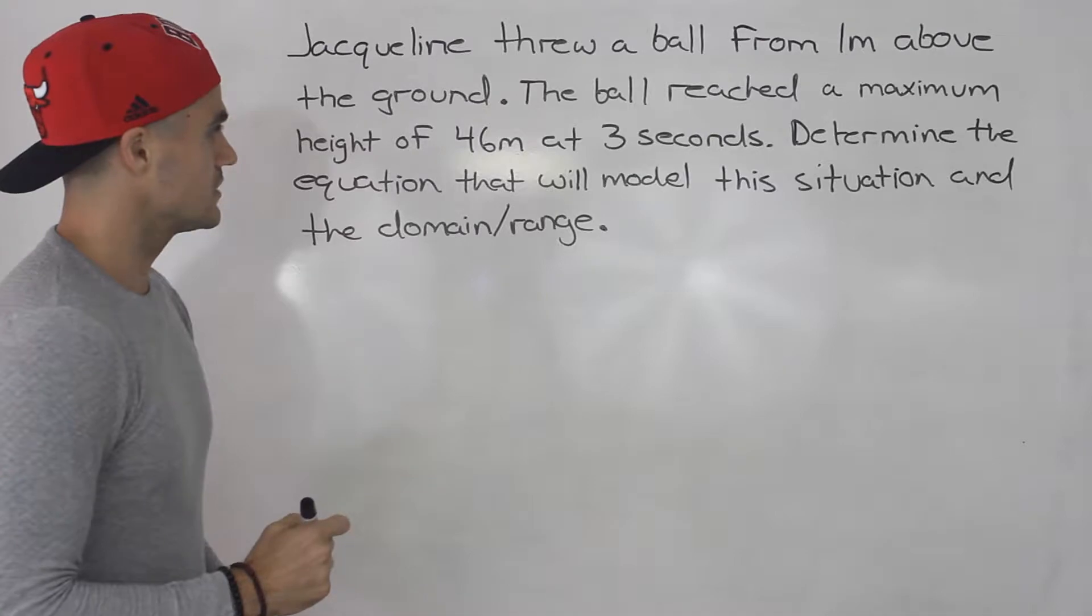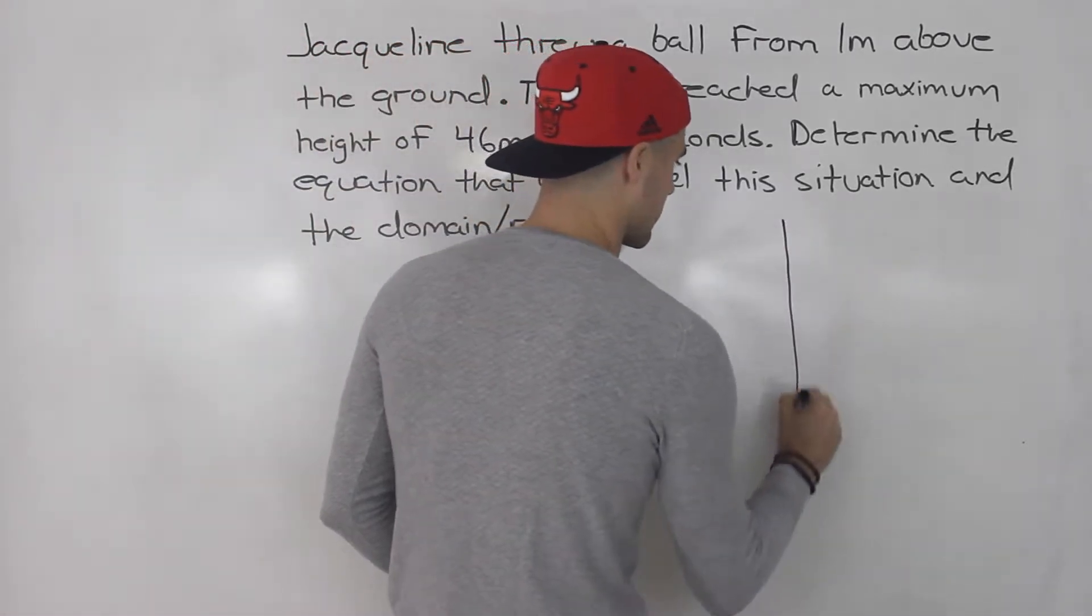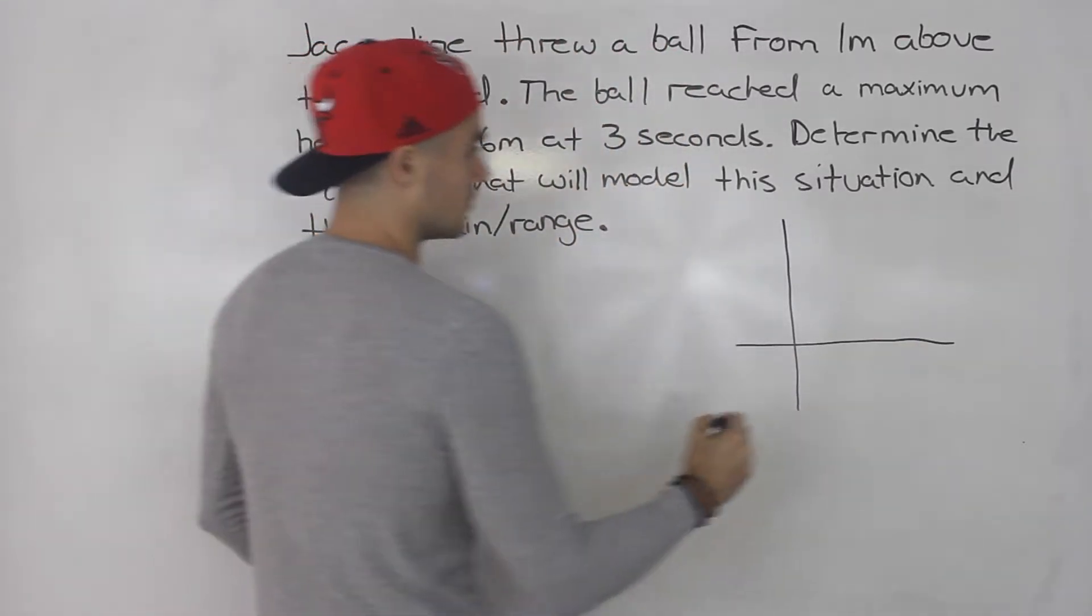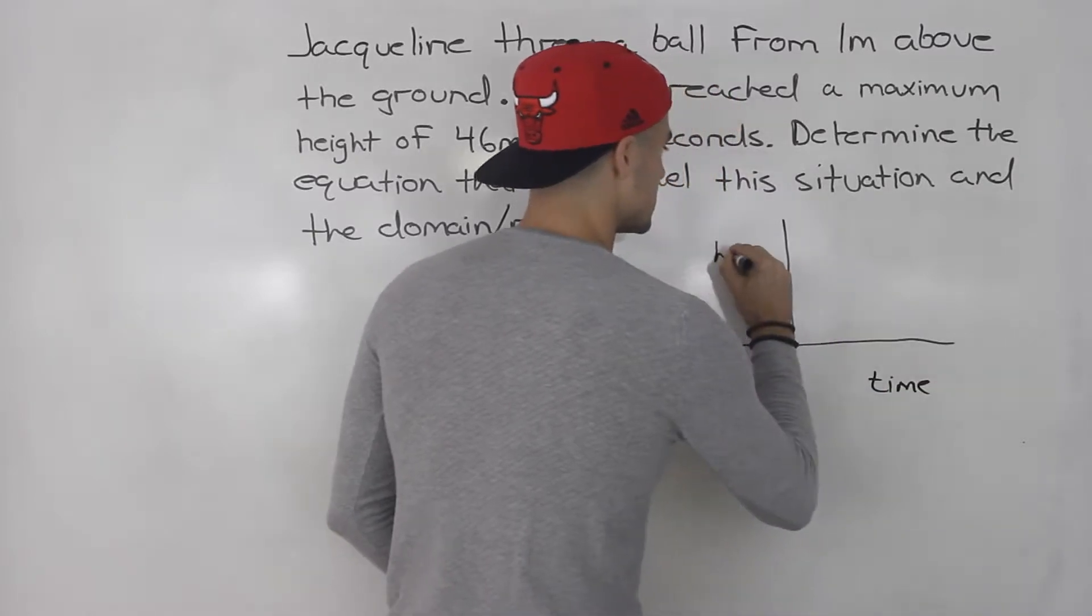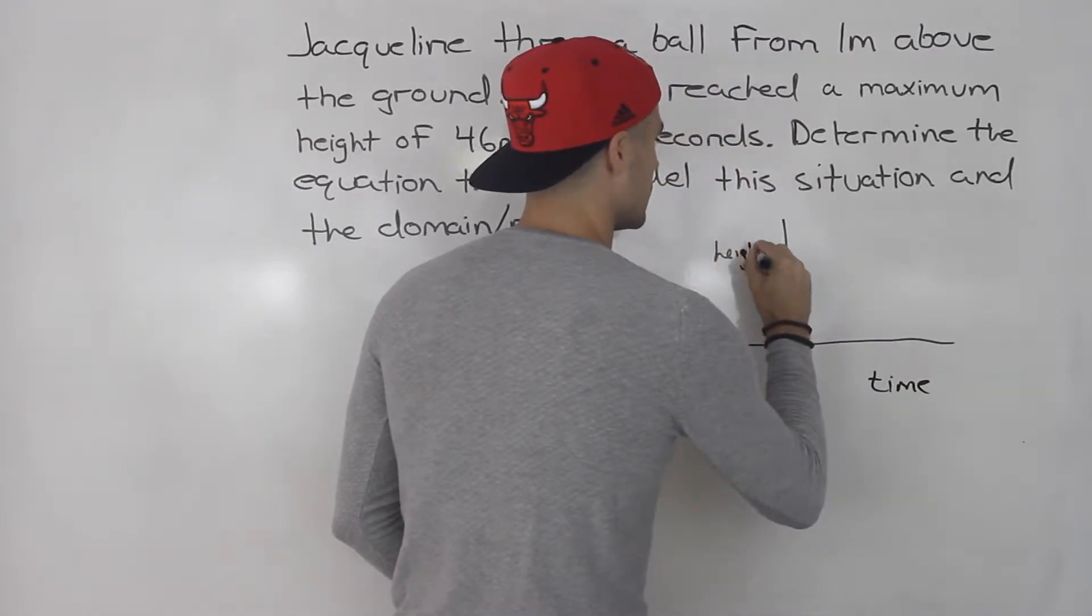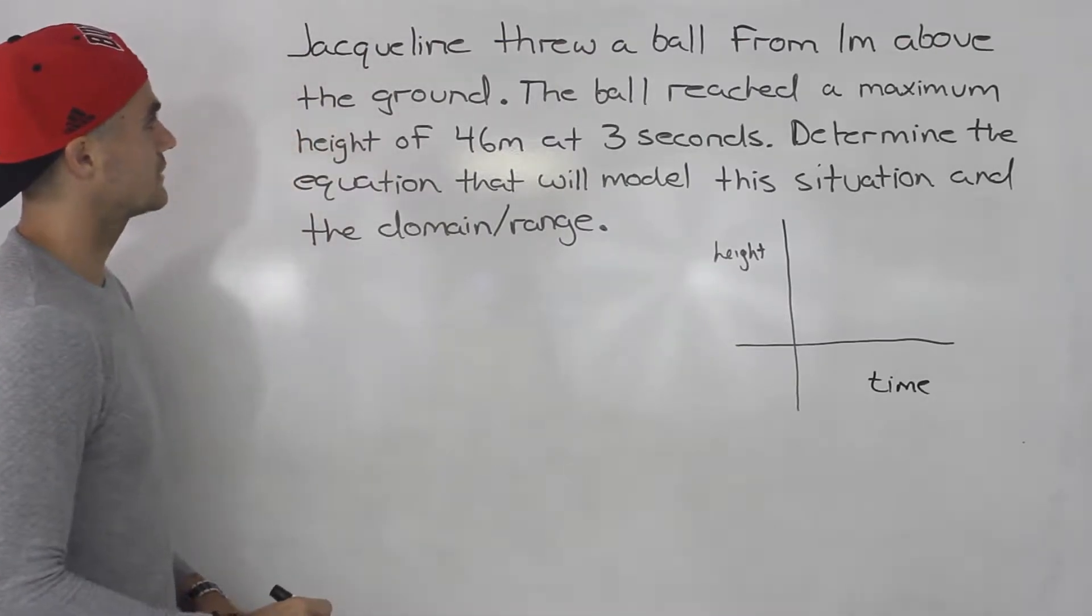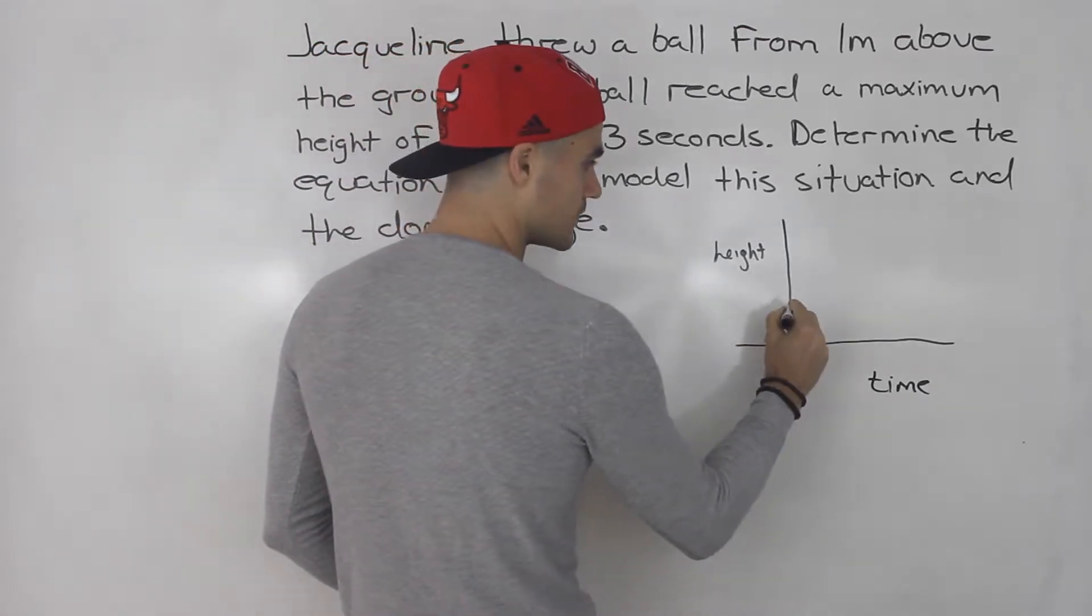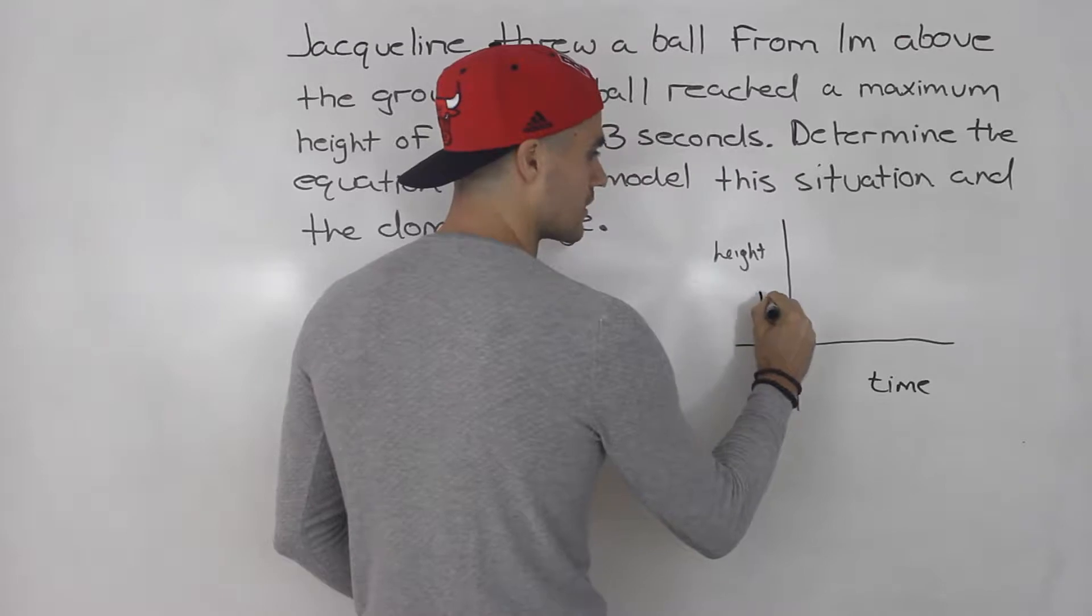So to start this off I'm going to actually draw a diagram of this situation. We know we're going to be modeling the height in terms of the time, and we're told that Jacqueline threw a ball from 1 meter above the ground. So at a time of 0, she threw the ball from here. This is 1 meter high.